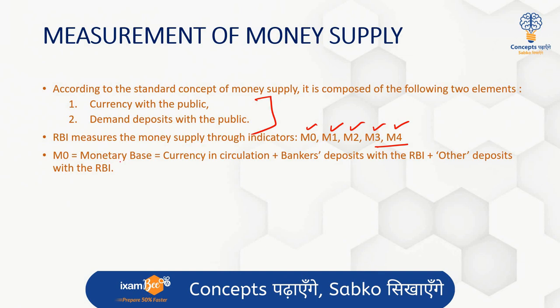M0 is also called the monetary base or reserve money. It comprises currency in circulation — that is, notes, rupee coins, and small coins in circulation — plus bankers' deposits with the RBI, which are balances maintained by banks in their current account with the RBI, mainly for maintaining the Cash Reserve Ratio (CRR) and as working funds for clearing adjustments. It also includes other deposits with the RBI — deposits from foreign central banks, multilateral institutions, financial institutions, and sundry deposits net of IMF account. All three together comprise M0.